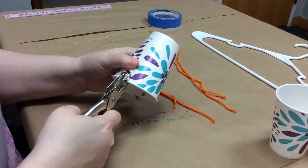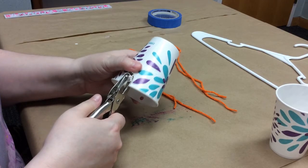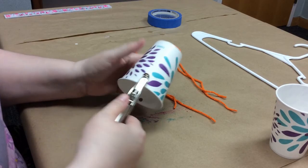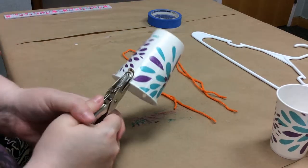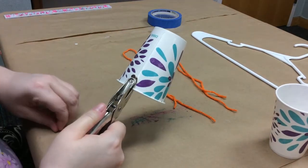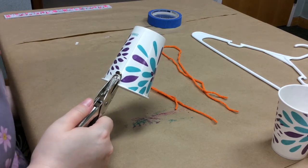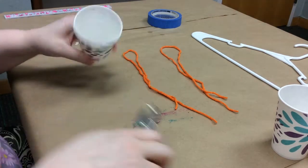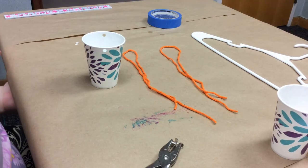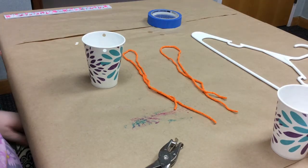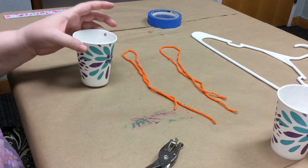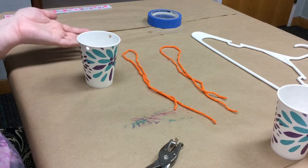So if you line it up well, it doesn't have to be perfect, but again, just the more symmetrical you get this, the more accurate your scale is. But because this is a pretty inaccurate scale, just in general, you'll get a good idea of the weight of things. Even if you're a little off, it's not really going to matter. This is not going to give us, obviously there's no numbers on our scale.